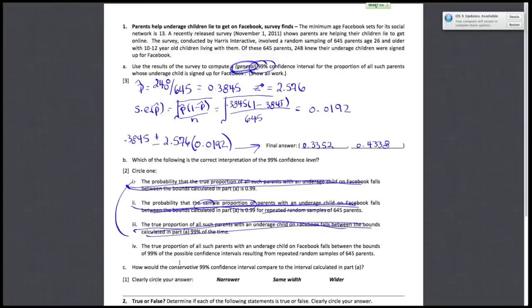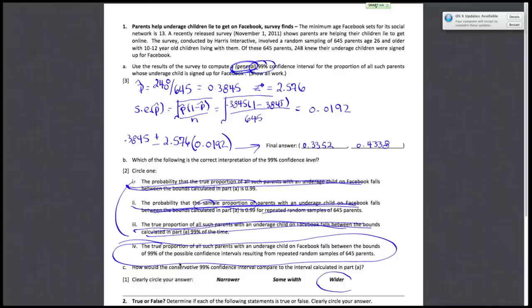By process of elimination, statement 4 is correct: the true proportion of all such parents with an underage child on Facebook falls between the bounds of 99% of the possible confidence intervals resulting from repeated random samples of 645 parents. For part C, comparing the conservative 99% confidence interval to the general interval from part A: conservative confidence intervals are always wider because you want to include more values — unless p̂ equals 0.5, in which case they are the same length.